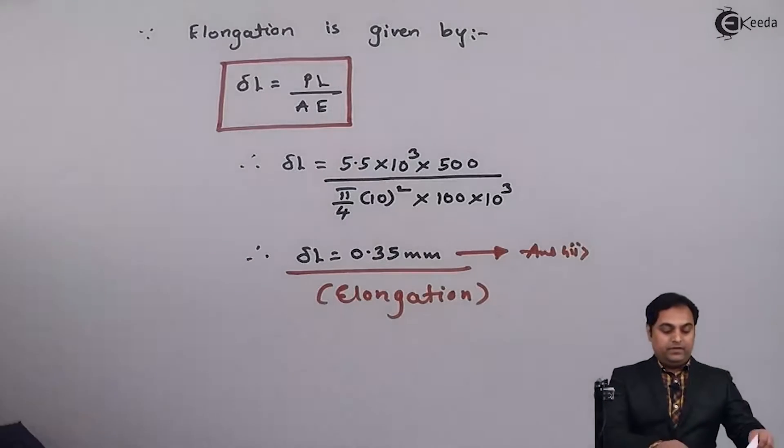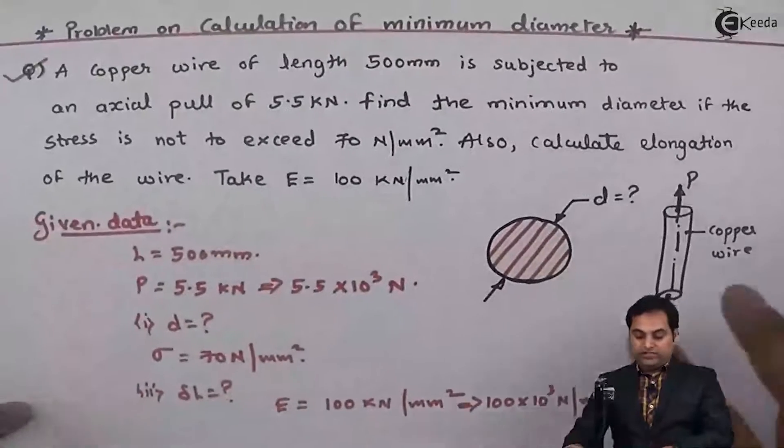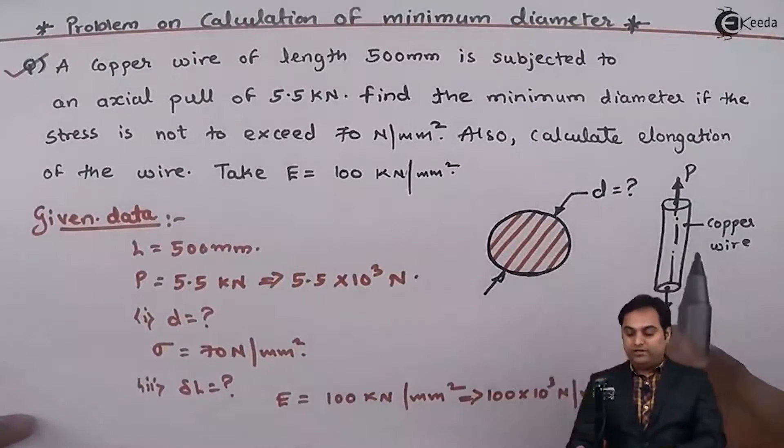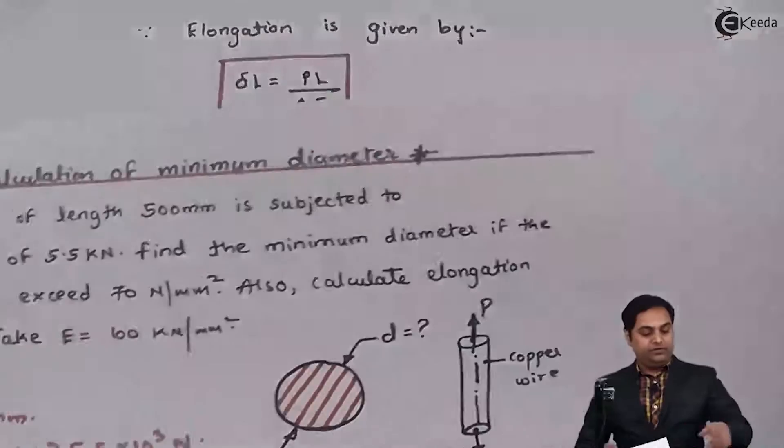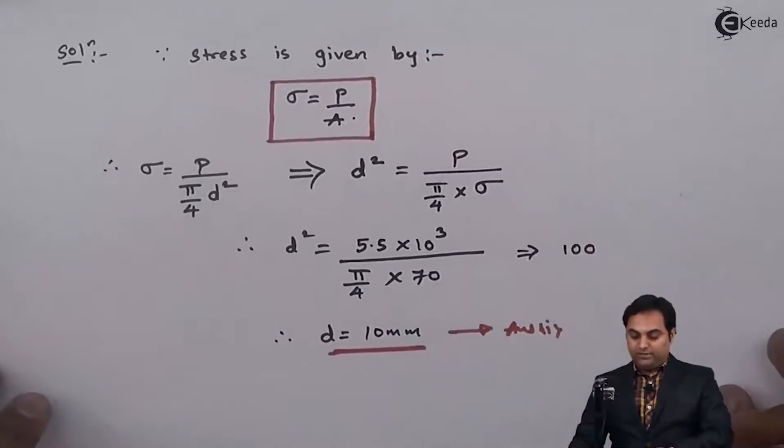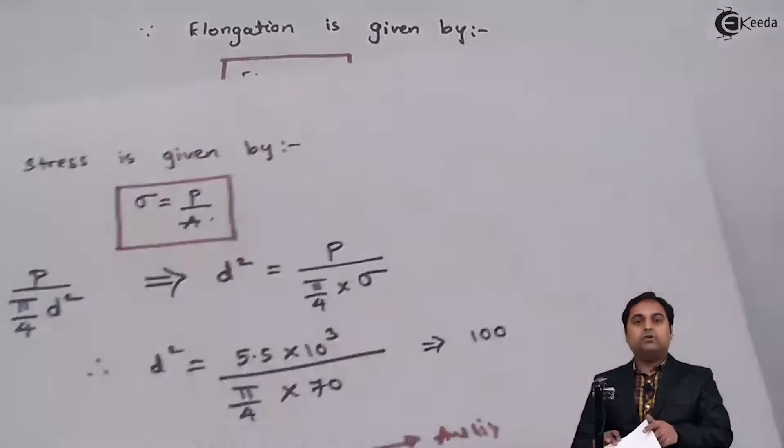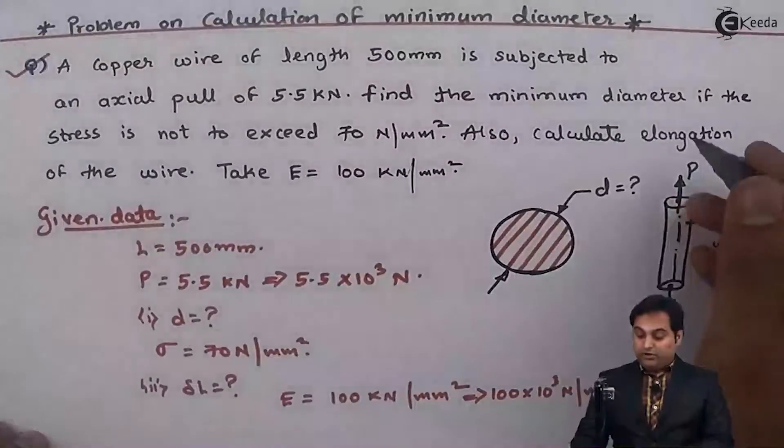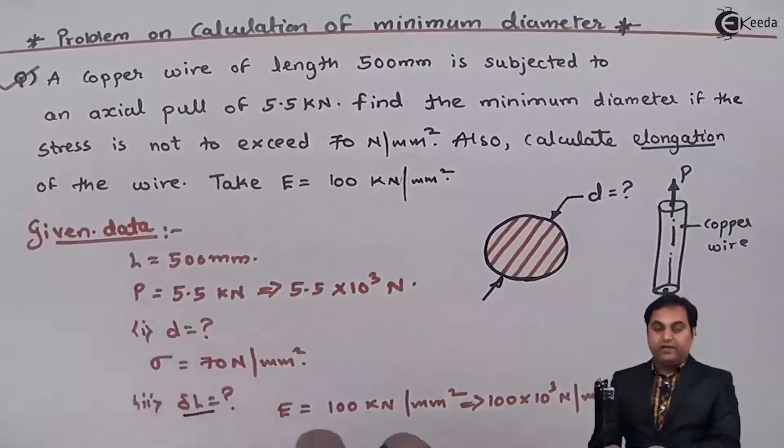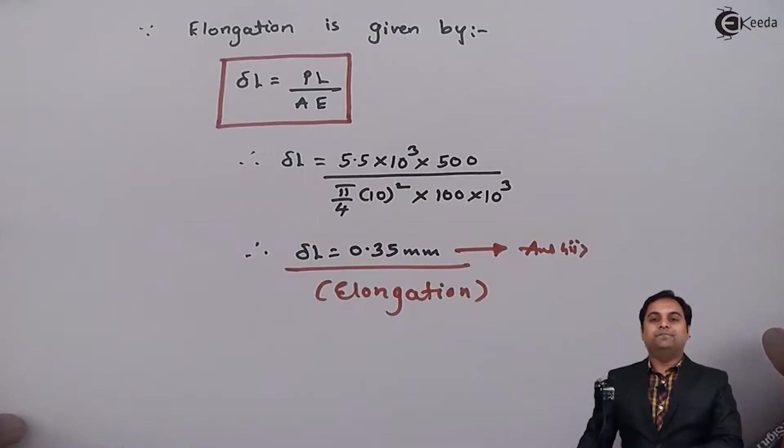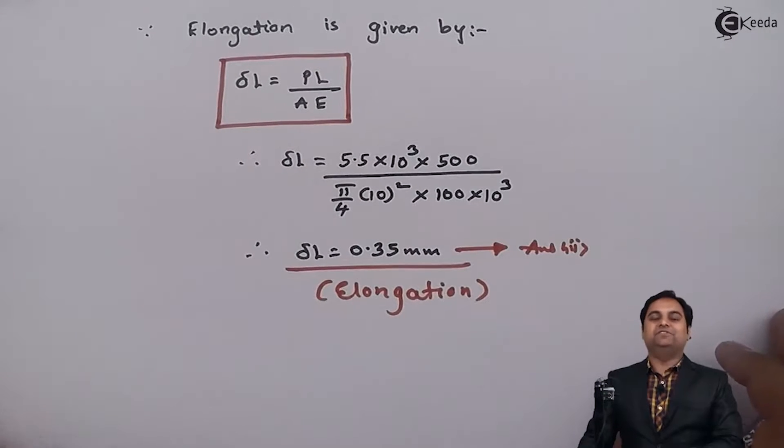So here in this video we have seen how to calculate the unknown diameter of the copper wire subjected to pull type of loading. That diameter was 10 mm, our answer number one. Next, this question was also telling us to calculate the elongation of the wire, delta L. And the answer of delta L is 0.35 mm. So with this we complete the question.